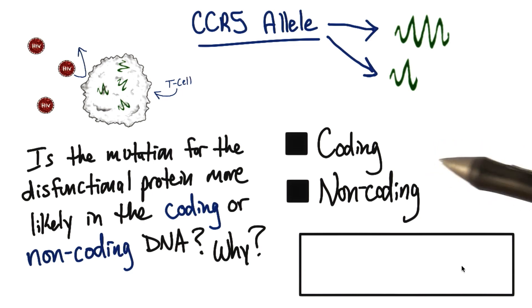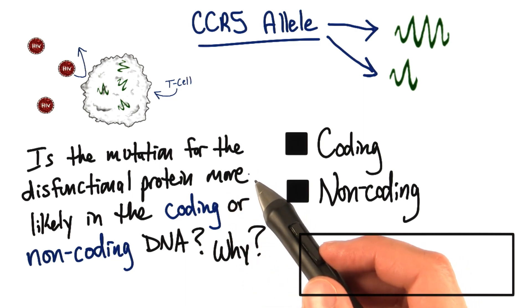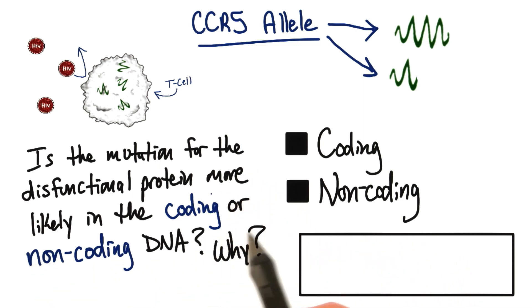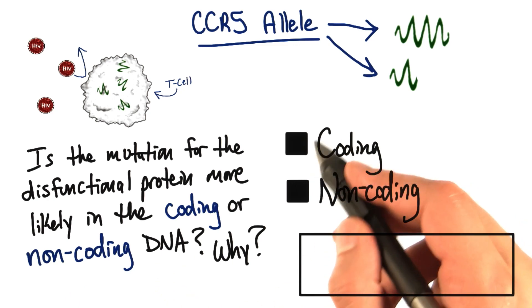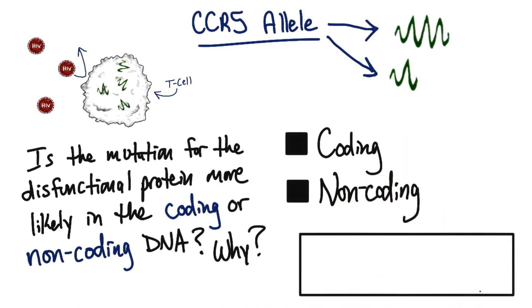So here's your first question using this example: Is the mutation for the dysfunctional protein that makes the T cell HIV resistant more likely in the coding or non-coding DNA of the genome? I want you to check one of these boxes and explain why you think that's the answer in this text box here. Save your answer, because you're going to need it in the next video.